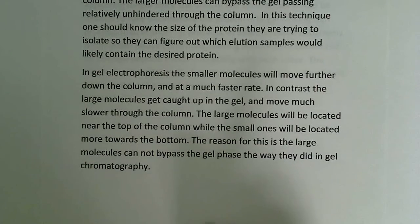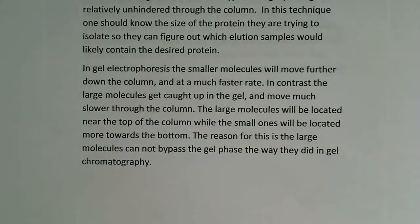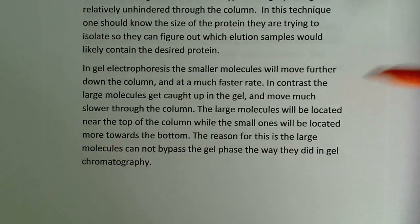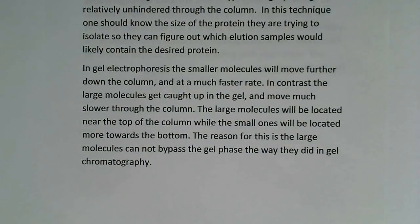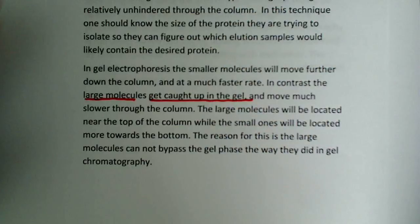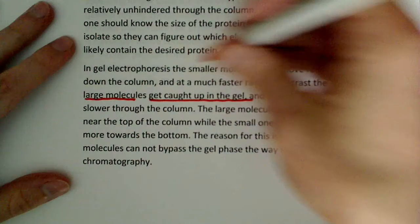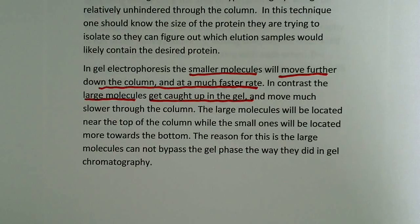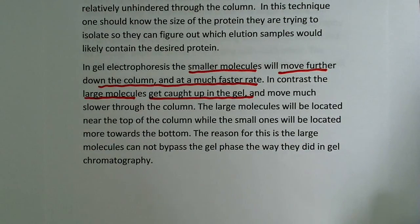Now moving on to gel electrophoresis. In gel electrophoresis, the small molecules will move further down the column at a much faster rate — this is essentially the opposite of gel filtration chromatography. In this case, the smaller proteins are actually going to move much faster through the gel and end up further down the column. In contrast, large molecules get caught up in the gel. The larger molecules will be located near the top of the column while the smaller ones will be located more towards the bottom.